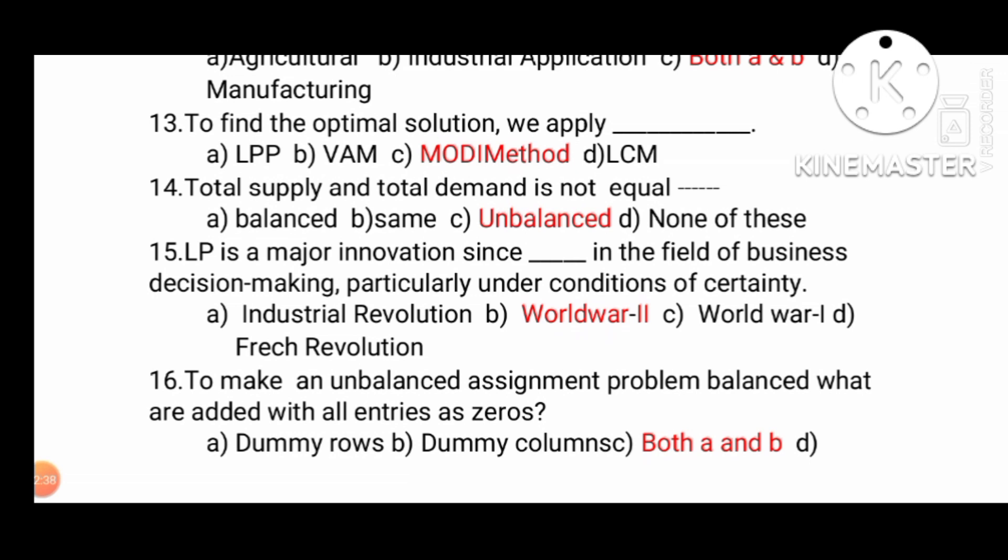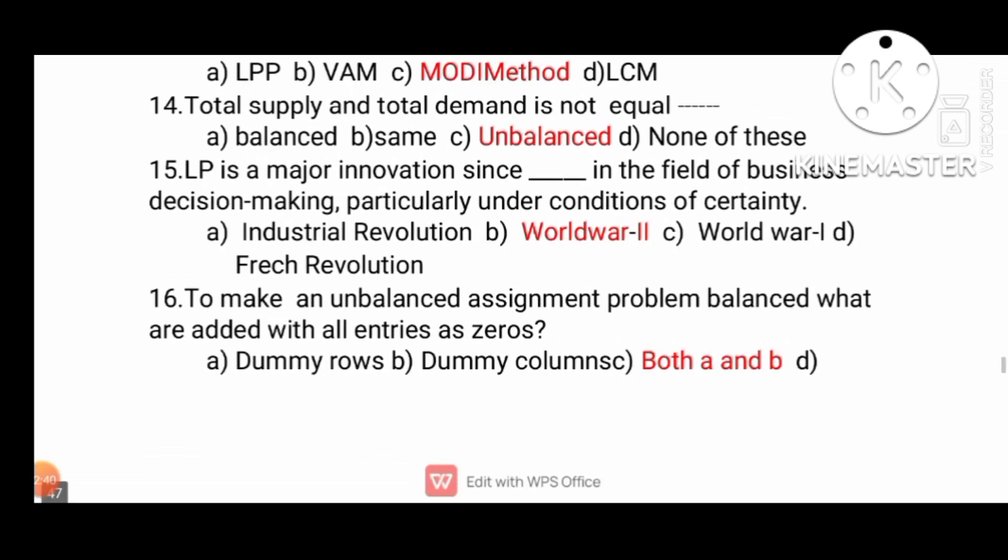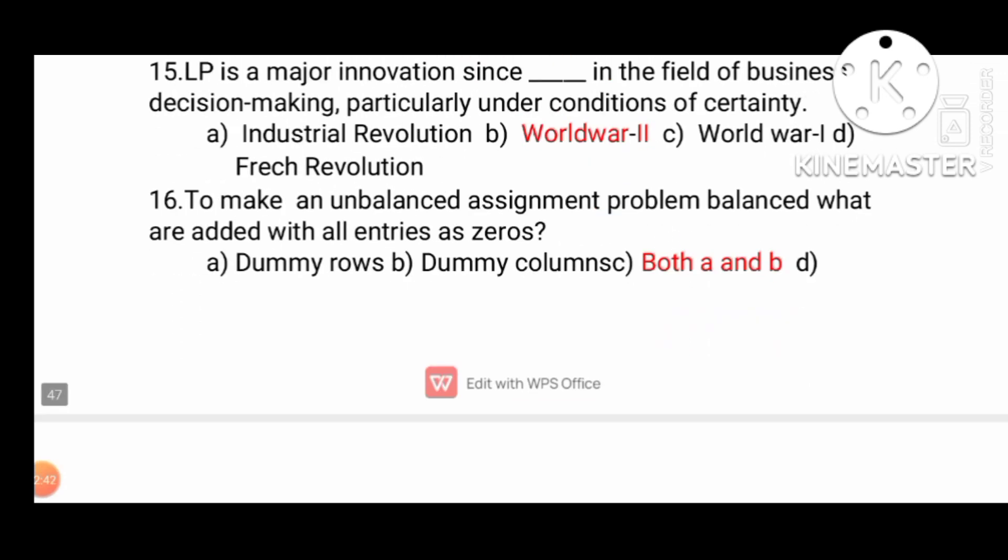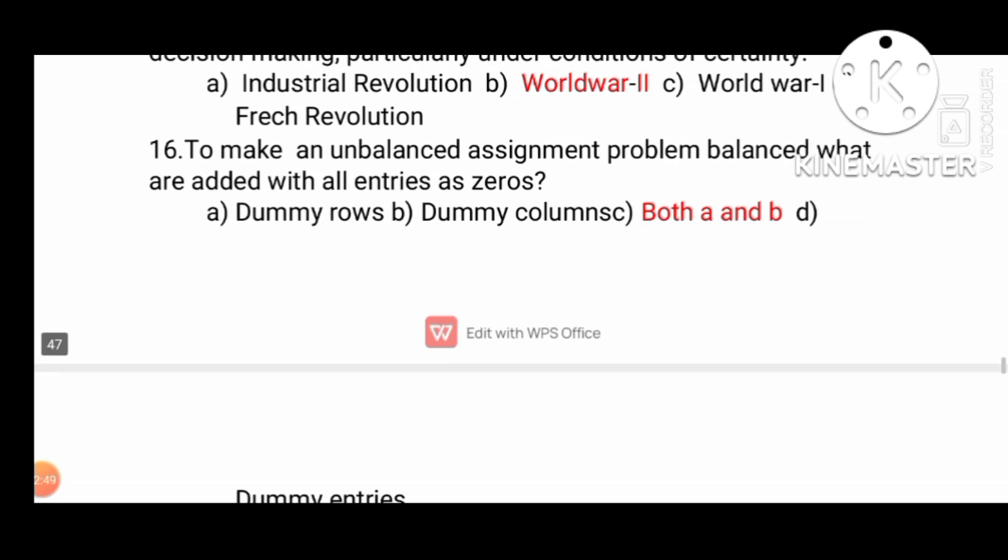First, the OR in the second world war. To make unbalanced assignment balanced, we add entries of zeroes, both A and B - dummy rows and dummy columns. This is a very important question.